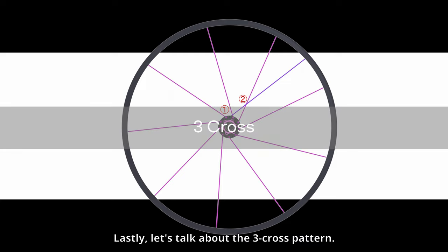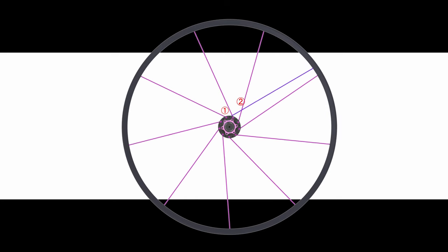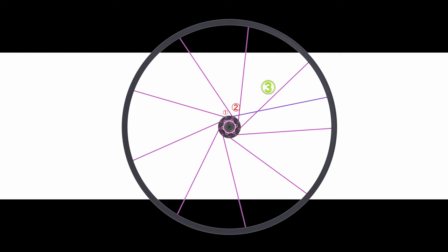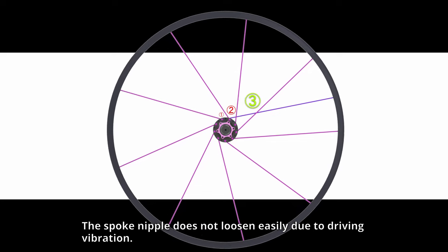Lastly, let's talk about the three-cross pattern. It is the strongest and most durable spoke pattern. The spoke nipple does not loosen easily due to driving vibration.